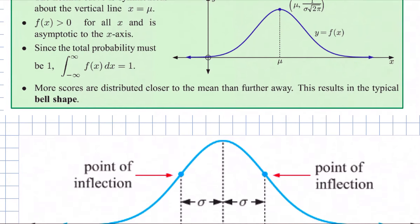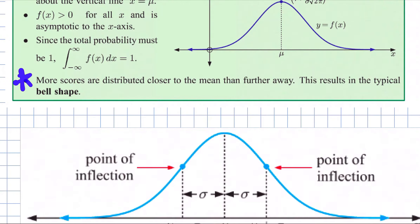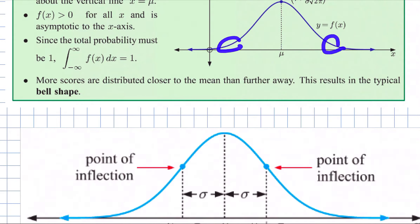The last dot point is important: we're going to get more of our scores closer to the mean. More of the values — say heights of females in Australia — are going to be in the area close to the mean than out in the extremes, which is fairly obvious, and that's your bell-shaped curve.